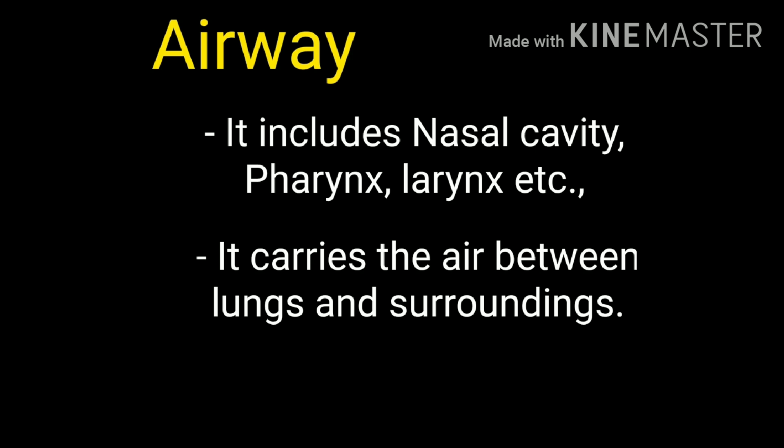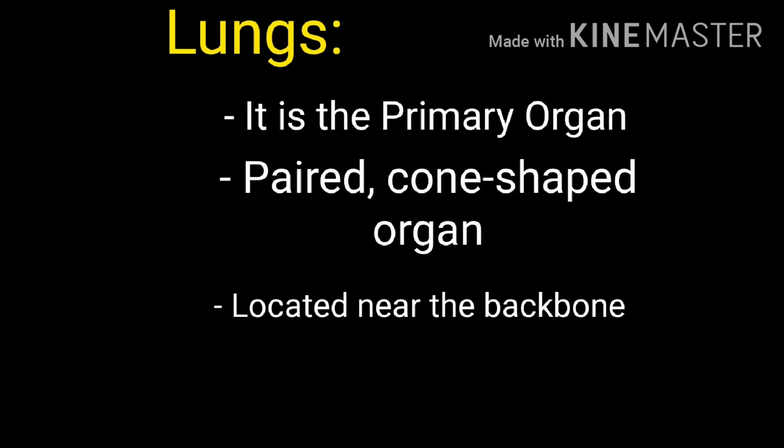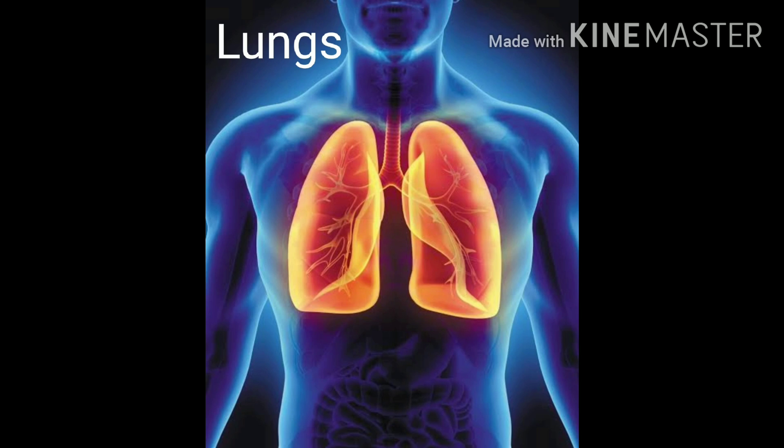The airway includes nasal cavity, pharynx, etc. It carries air between the lungs and the surroundings. Next, lungs — it is the important organ in the respiratory system. Lungs is a cone-shaped organ. It takes in the oxygen and gives away the carbon dioxide.